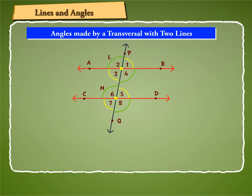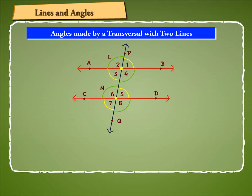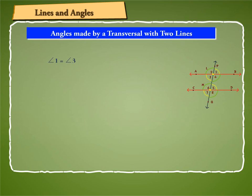Let us understand this by means of an example. In the figure given, if AB is parallel to CD and angle 1 is equal to 80 degrees, find the other angles. Let us find the measures of angle 2, angle 3, angle 4, angle 5, angle 6, angle 7 and angle 8. Since angle 1 and angle 3 are vertically opposite angles, angle 3 is equal to angle 1 is equal to 80 degrees.